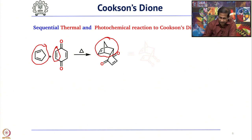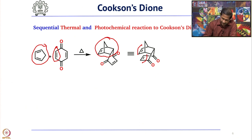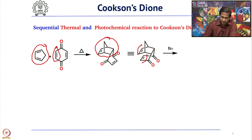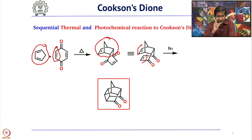When you redraw this molecule, you can see two double bonds that are very close to each other. On shining light, this undergoes a 2+2 intramolecular cycloaddition to give a very interesting strained dione. This is called Cookson Dione because it was prepared by Cookson for the first time, in just 2 steps.